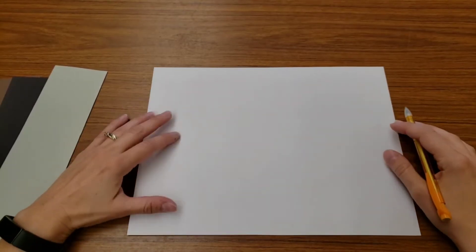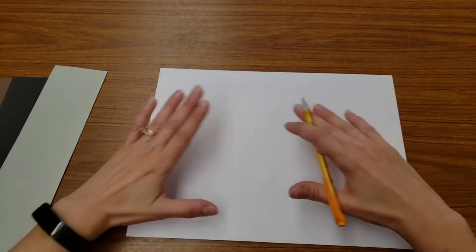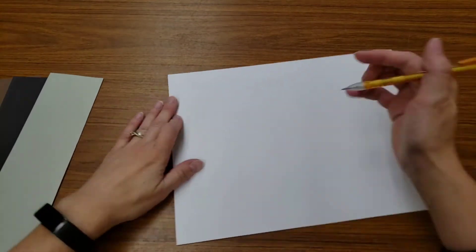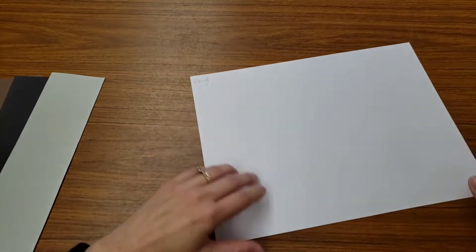Today we're going to make a landscape in the style of artist Georgia O'Keeffe. You will have a piece of paper that is laying down, horizontal. I need you to write your name in the corner and flip it over.